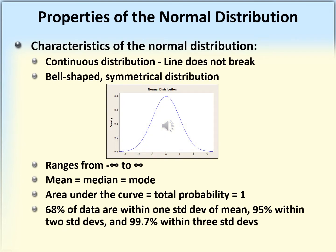The second distribution we are going to consider is the normal distribution. It is a continuous distribution from negative infinity to positive infinity. The curve is smooth and pill-shaped, meaning it is a symmetric distribution. Symmetry means that the mode divides the distribution into two halves, and each half is the mirror of the other.